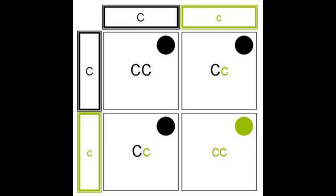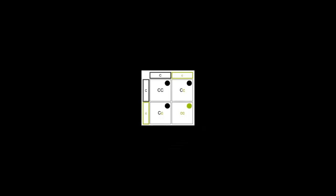There are certain alleles that code for a disease. If the offspring inherits a dominant allele for a disorder, they may end up with it. If it's a recessive allele, they would need to inherit two copies of it to end up with the disorder.